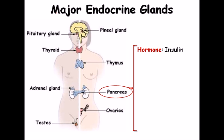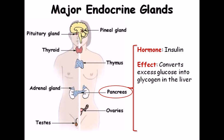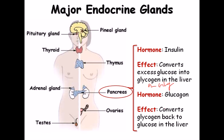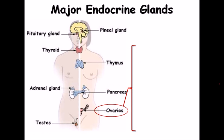The pancreas secretes two hormones: insulin and glucagon. Insulin converts excess glucose into glycogen stored in the liver — the conversion from glucose to glycogen. Glucagon converts glycogen back to glucose. This cycle is maintained to keep track of glucose metabolism.